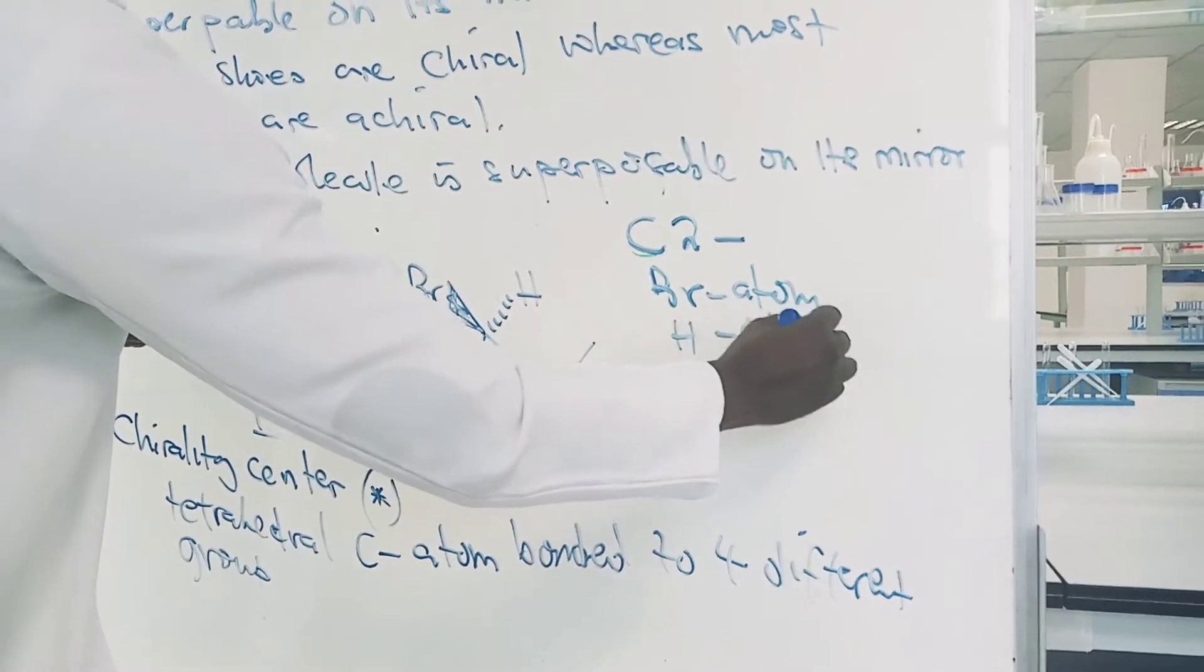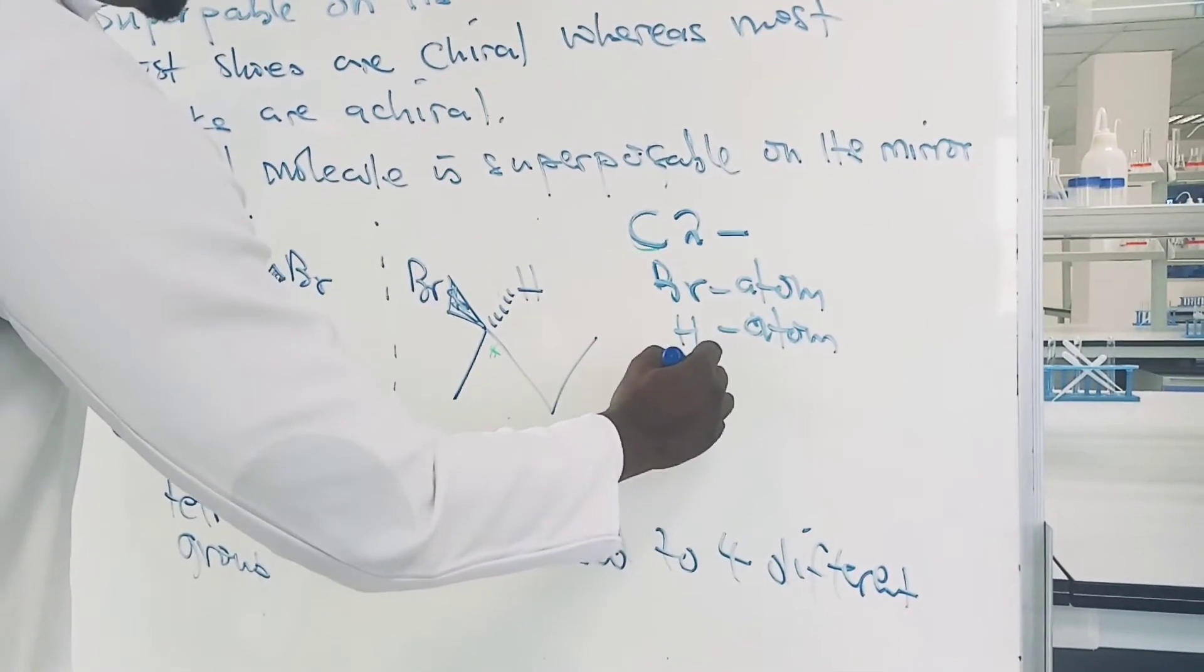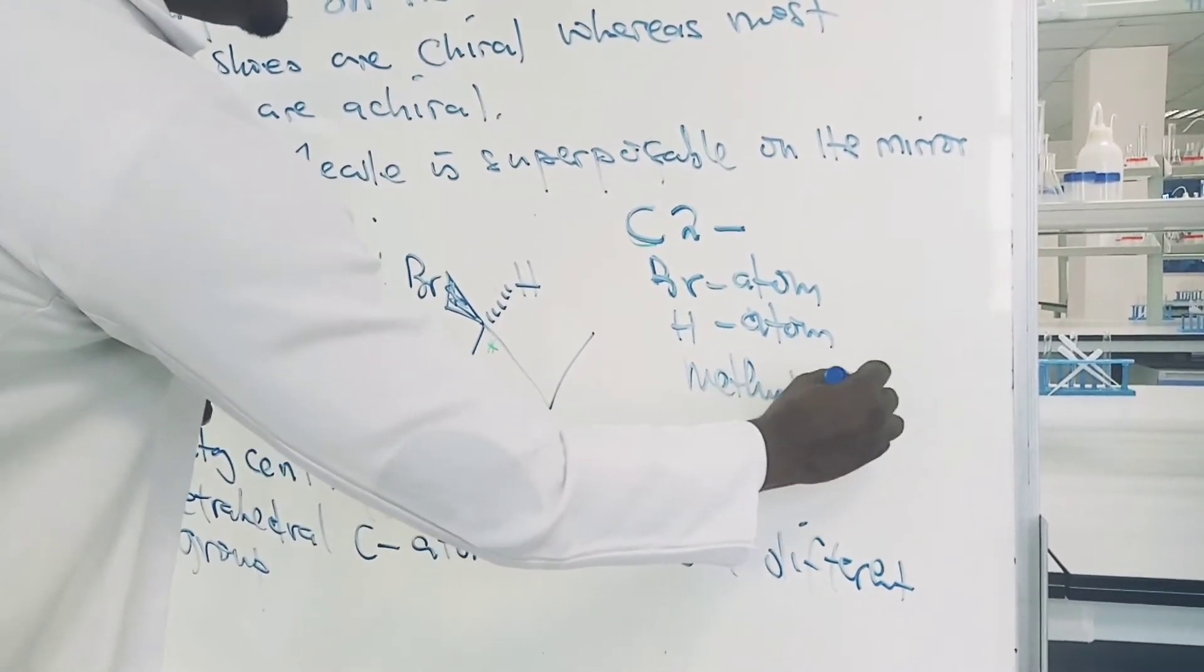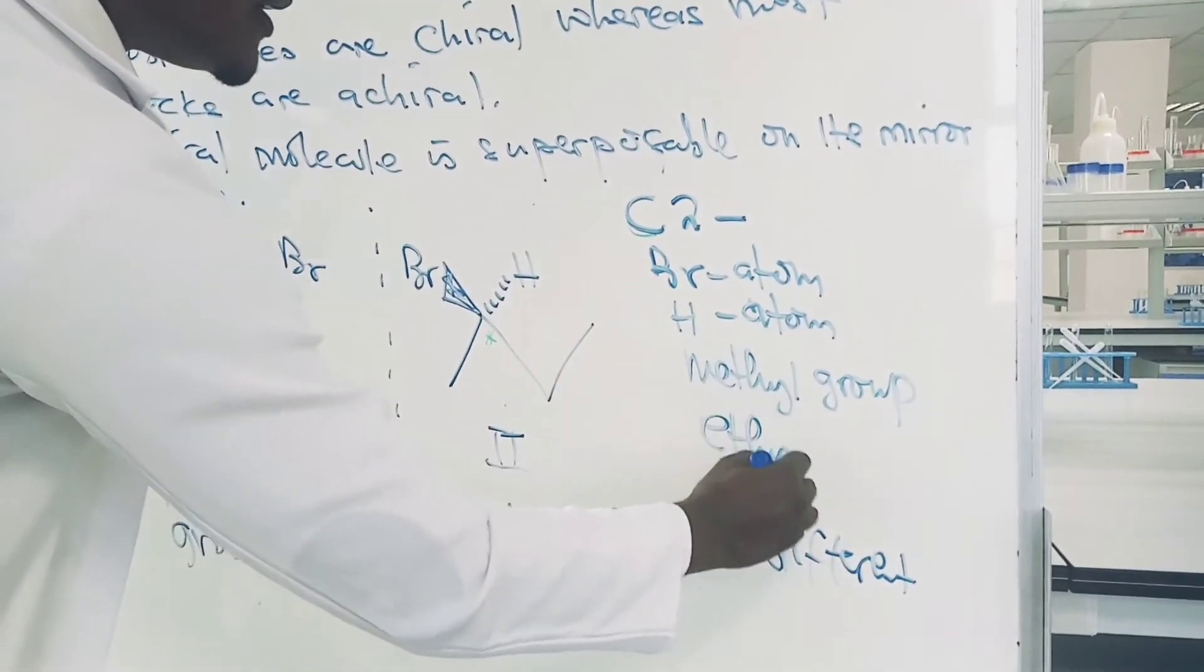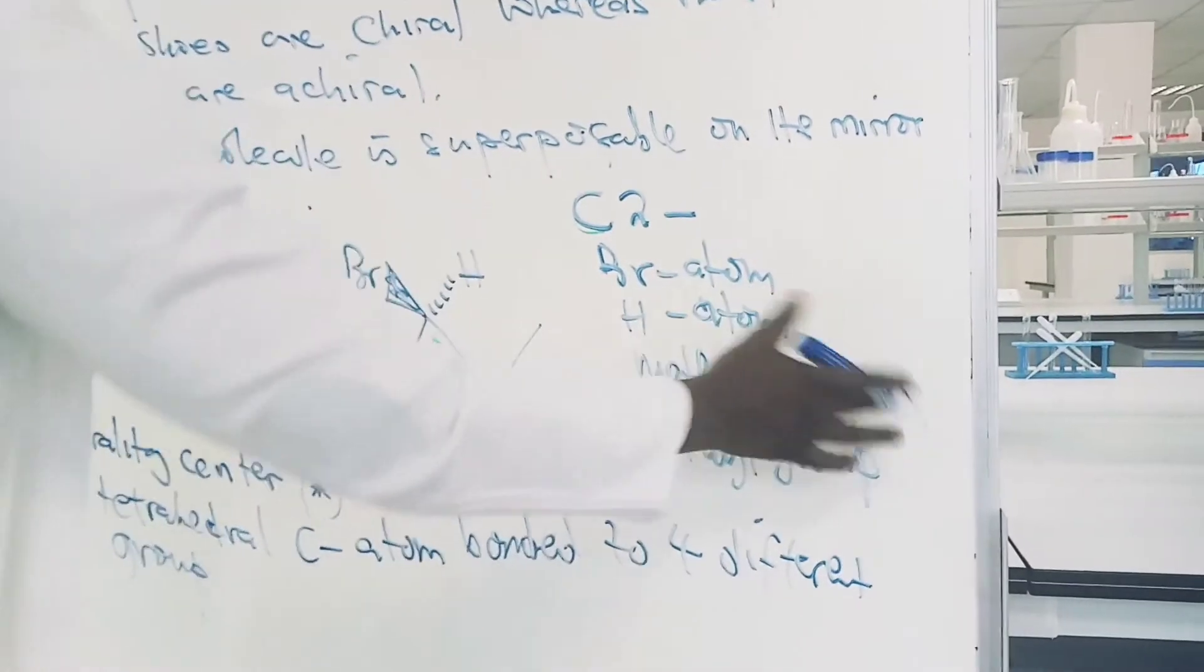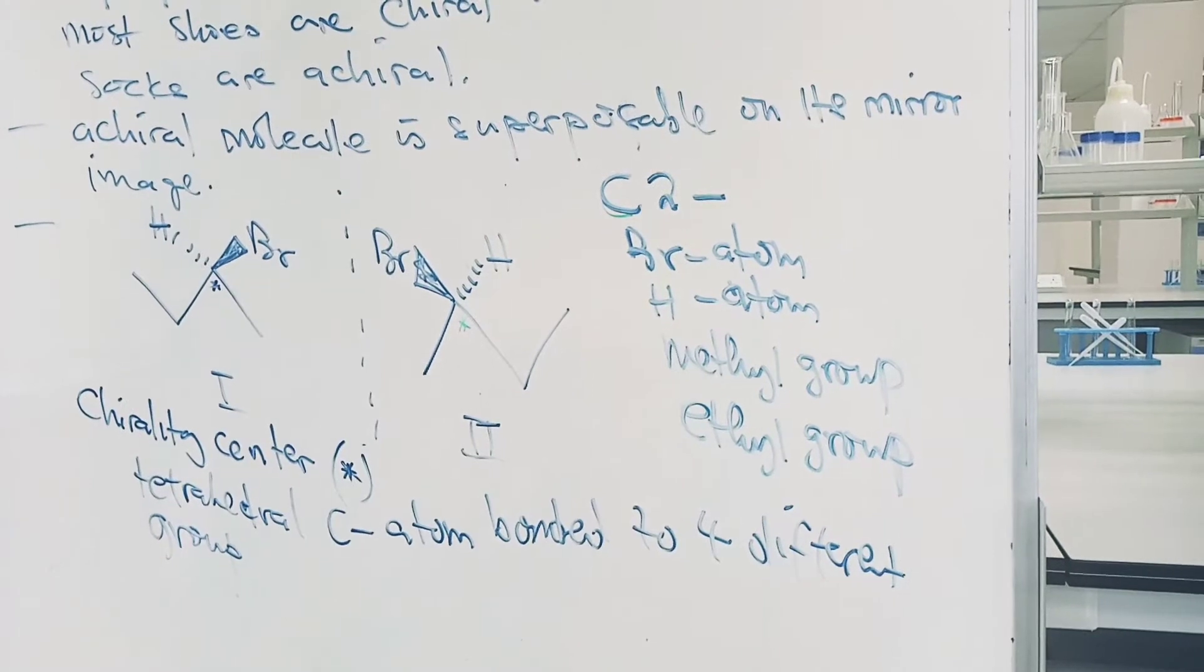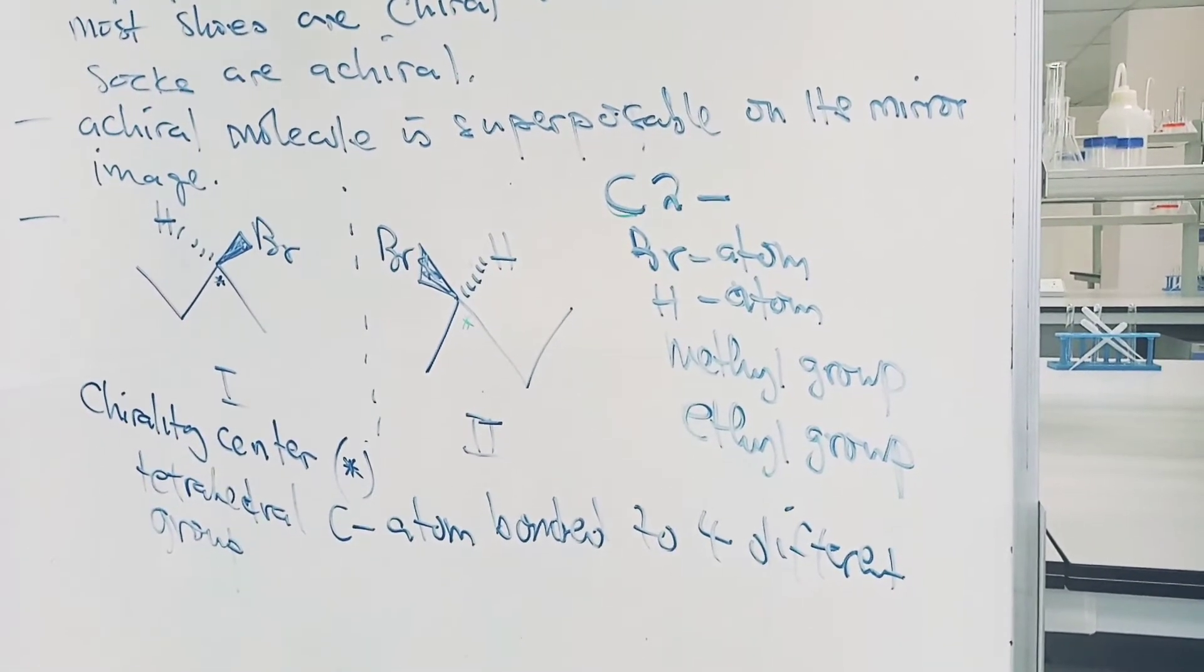Then we have the methyl group and the ethyl group. So the 4 groups must be different for it to qualify to be called a chirality center.